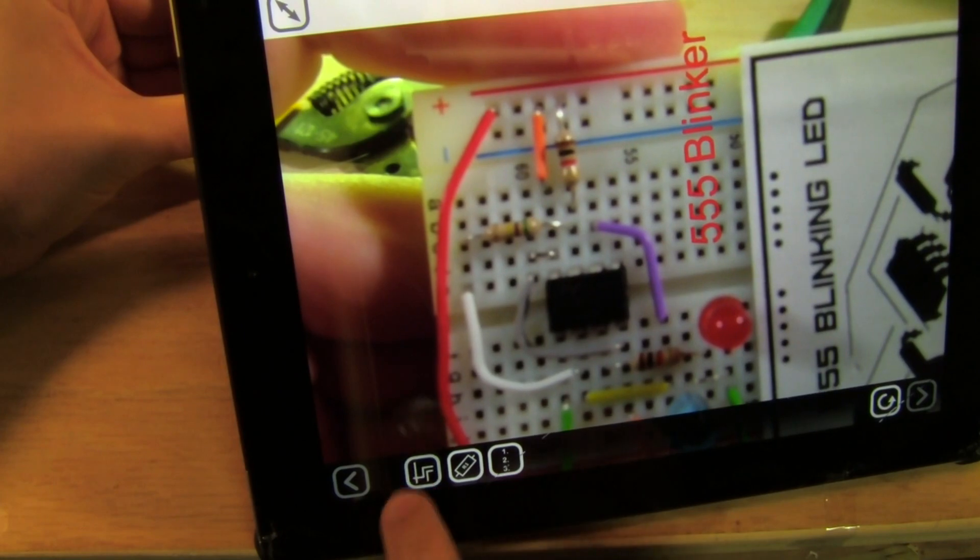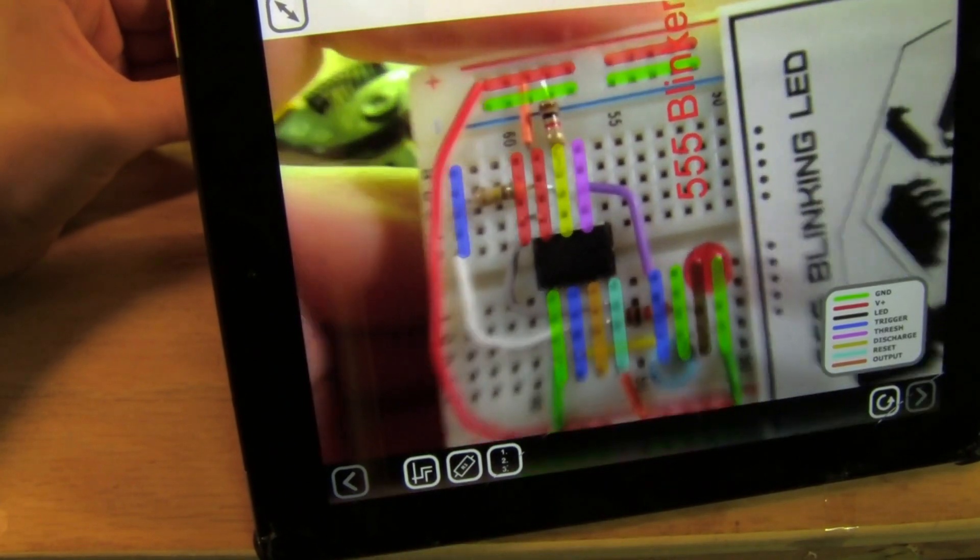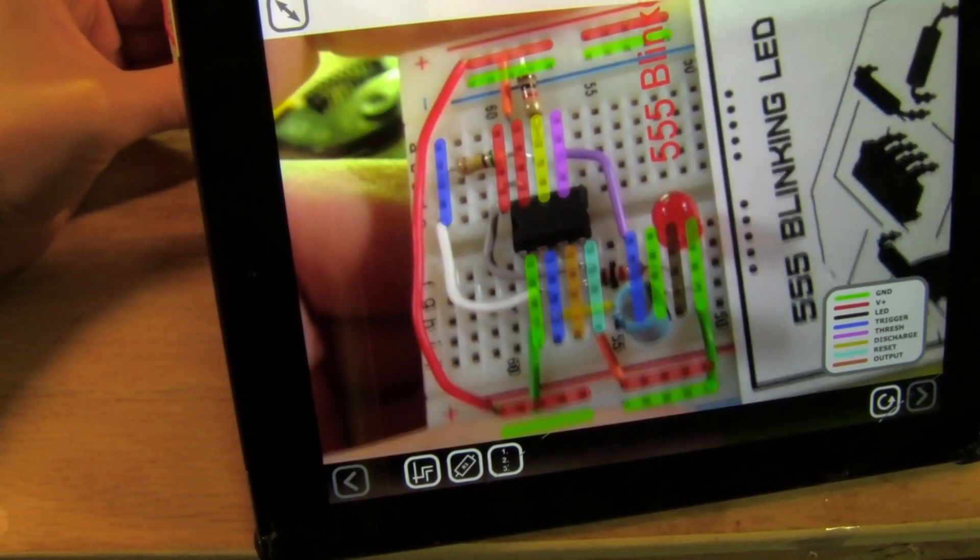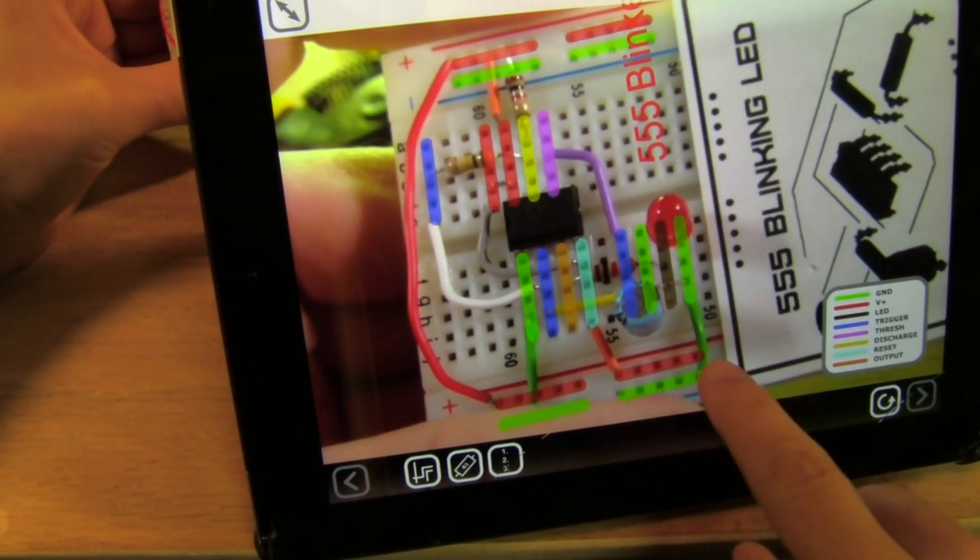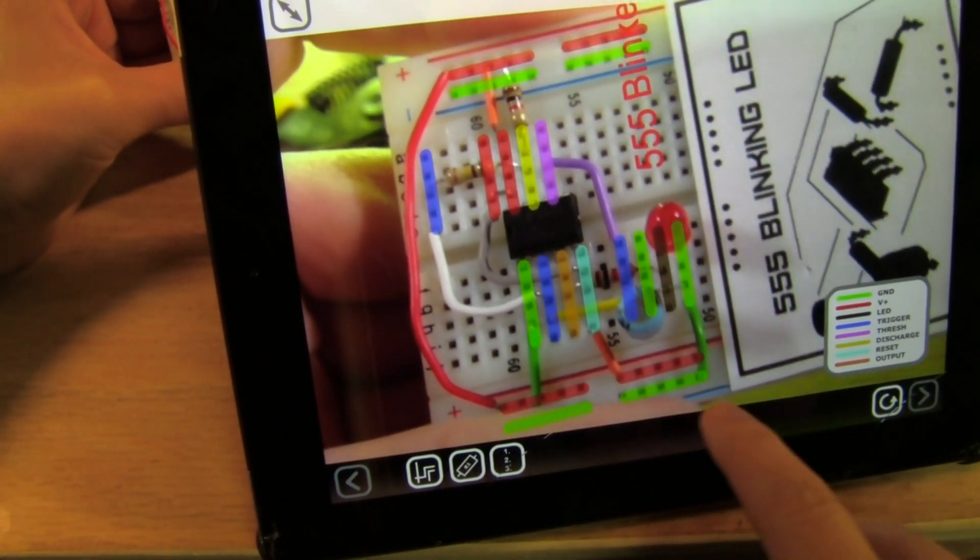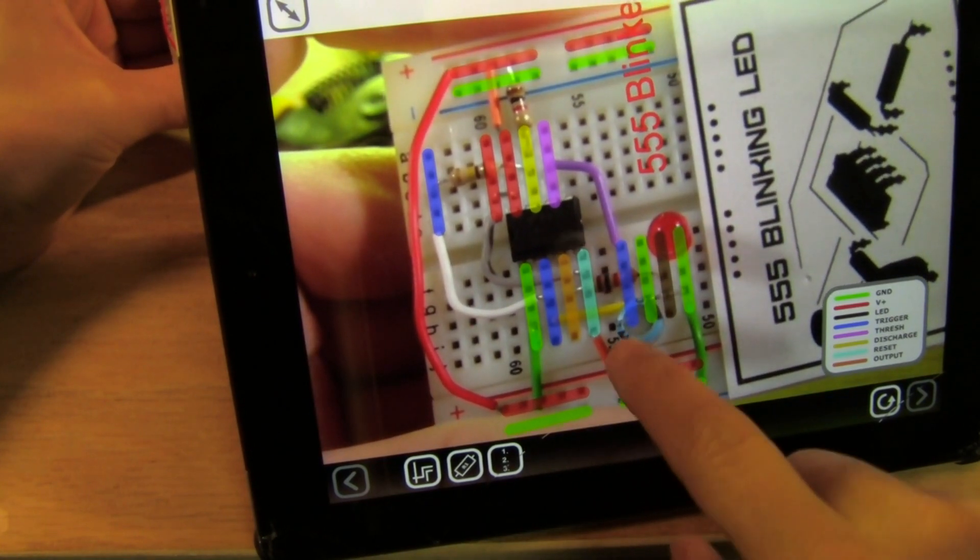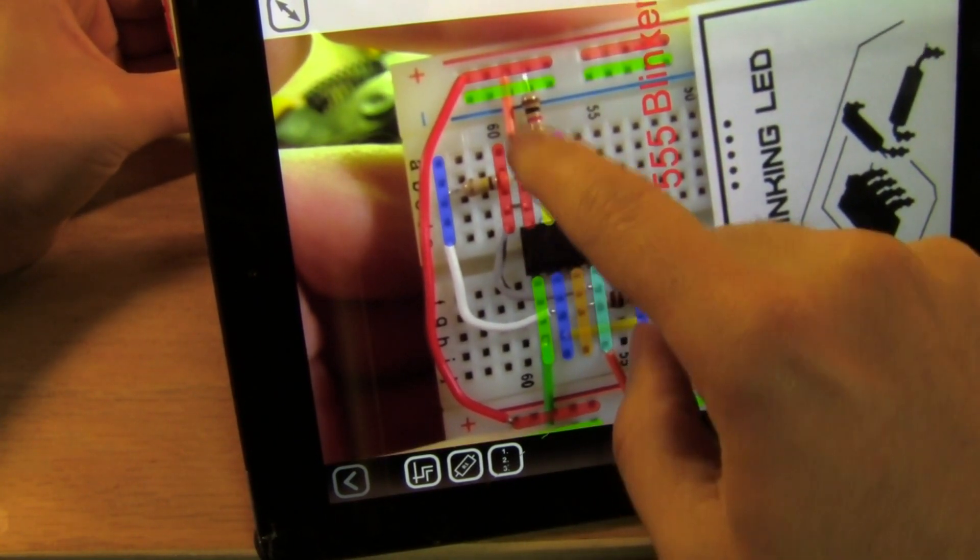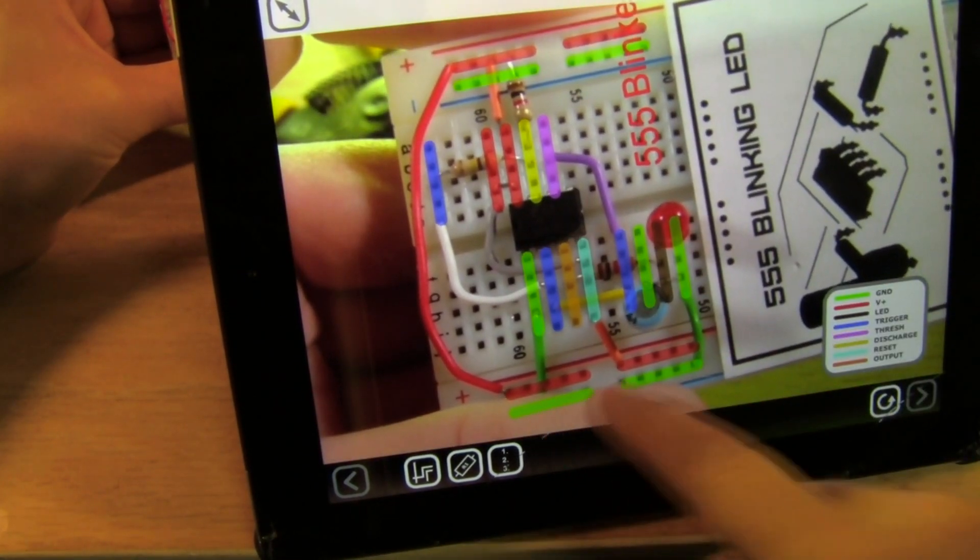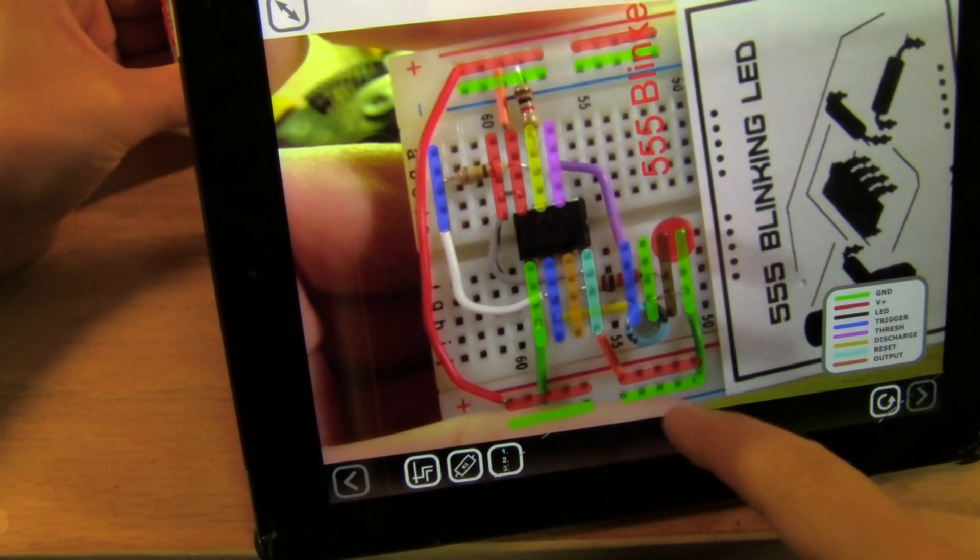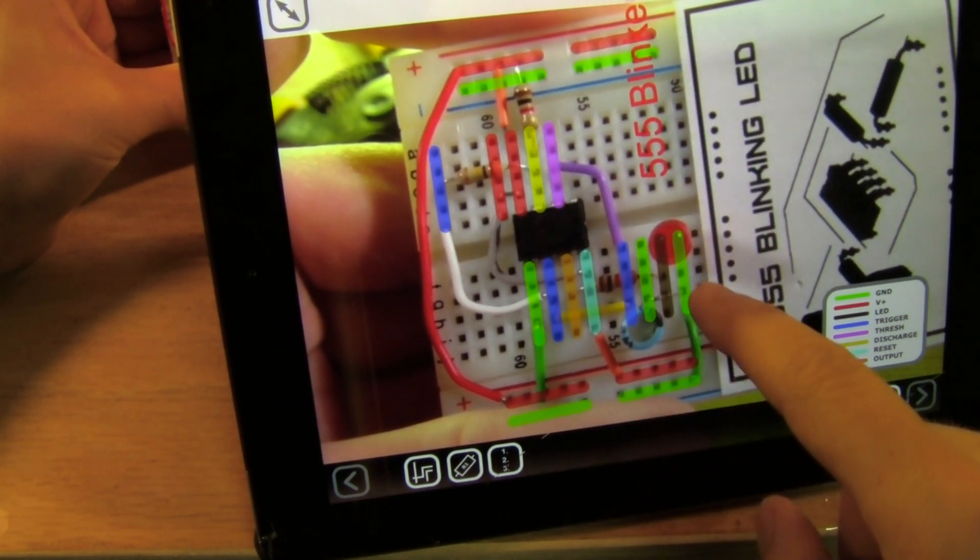I can also overlay net information. So here according to this key down here, everything red is V plus, everything green is ground. So now I know immediately that these two rows are both V plus, everything obviously on the sides is V plus and ground, and then I've got all my other nets labeled here too.